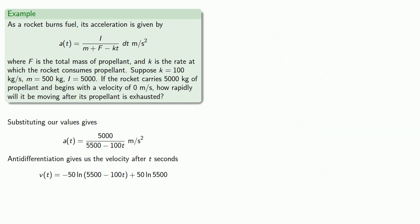So how can we find the velocity after the propellant is exhausted? Well, we need to know what T is. So here we have to look closely at what our variables and parameters represent. And in this case, K is the rate at which the rocket consumes propellant. And we know that K is 100 kilograms per second, and the mass of propellant is 5000 kilograms.